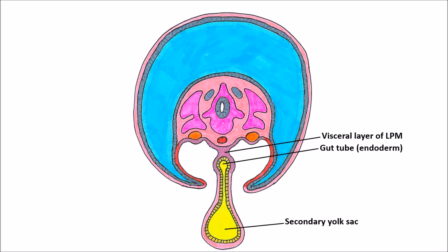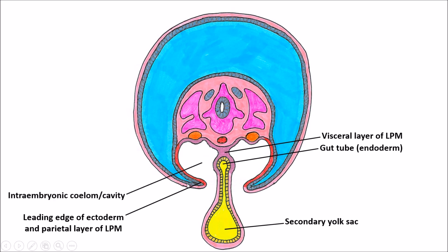We only have a very thin structure — referred to as a vitelline duct — connecting the gut tube to the yolk sac, and eventually the yolk sac will recede completely. This is because the parietal layer of lateral plate mesoderm is moving around on either side, lined by ectoderm, and these two edges meet each other and completely seal off the body, creating a cavity called the intraembryonic coelom. As that happens, it's pulling the amniotic cavity around the embryo entirely, and the amniotic fluid is the water referred to when someone's water breaks during birth.